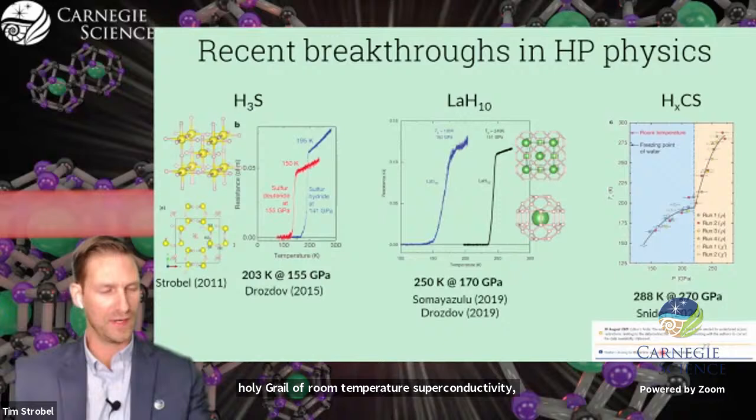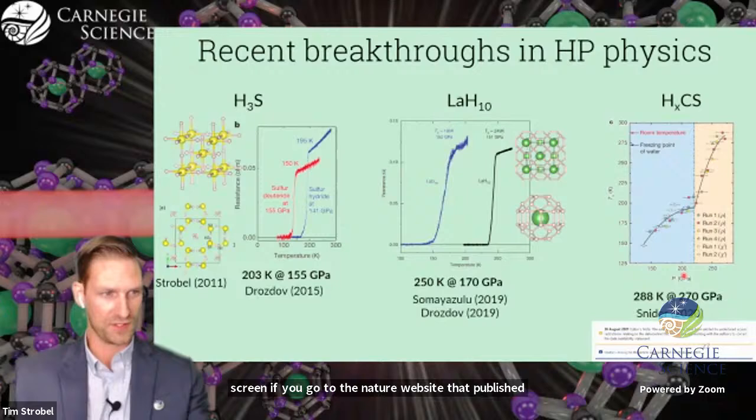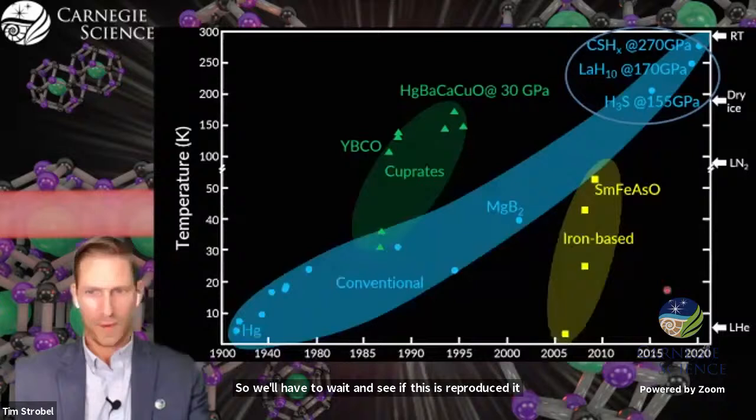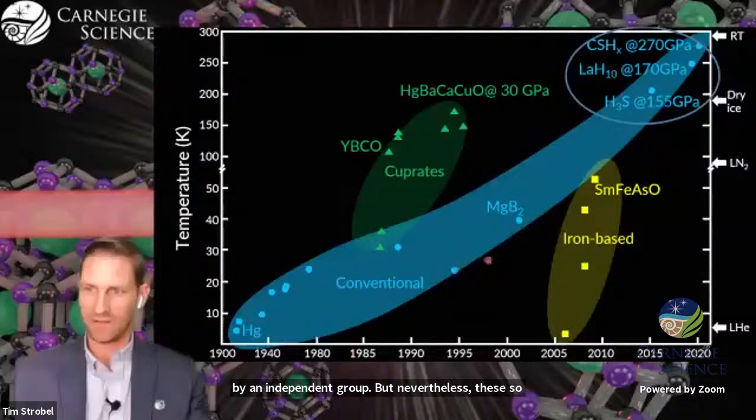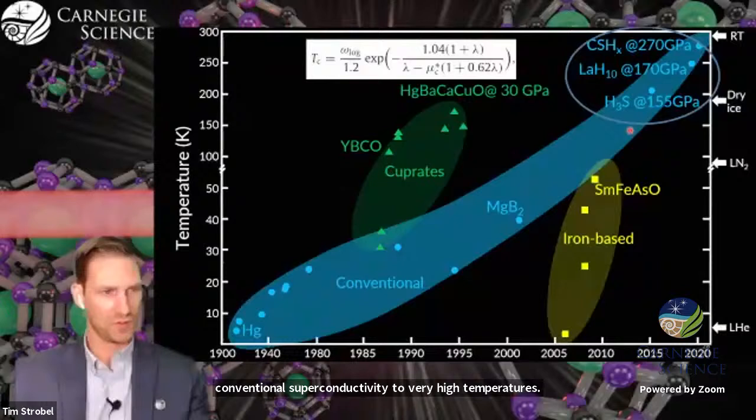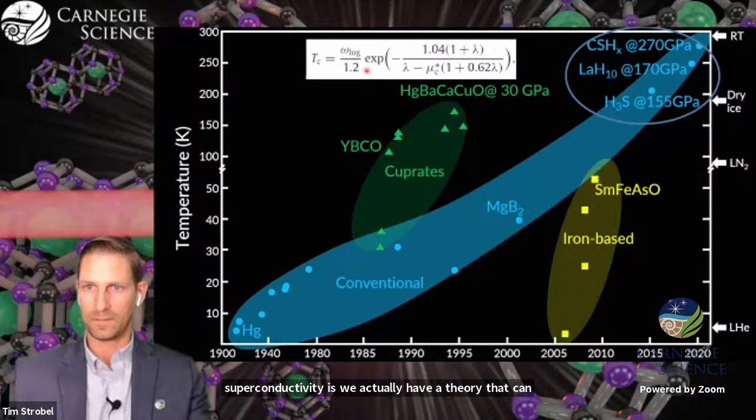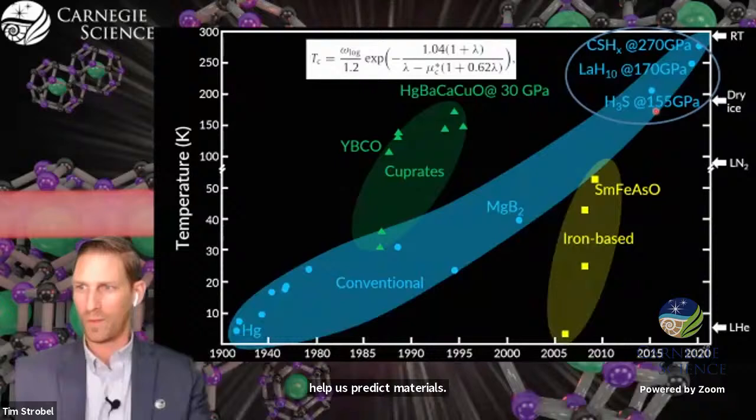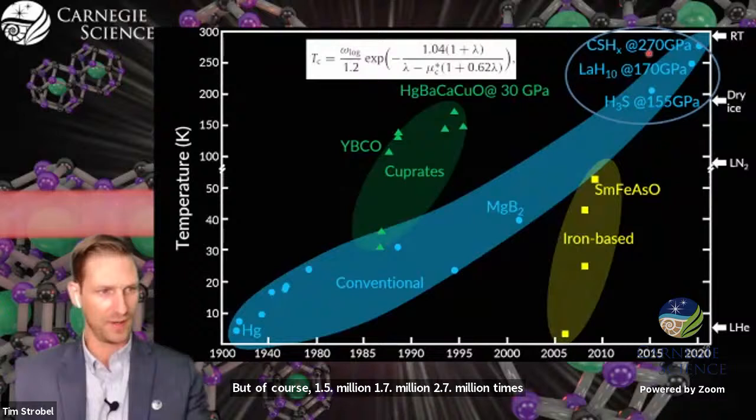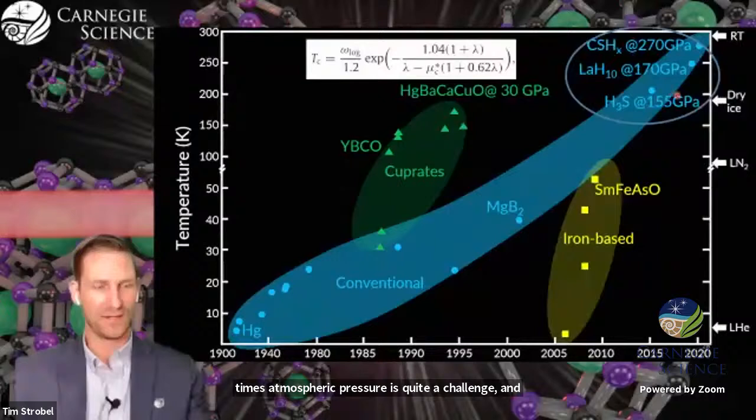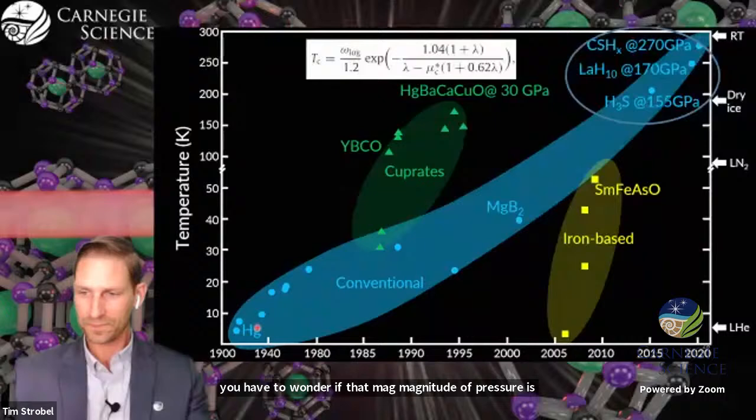I will point out, however, if you go to the Nature website that published this paper, there's a warning now that says that this result is disputed. So we'll have to wait and see. But nevertheless, these so-called superhydride structures have now extended conventional superconductivity to very high temperatures. But 1.5 million, 1.7 million, 2.7 million times atmospheric pressure is quite a challenge.